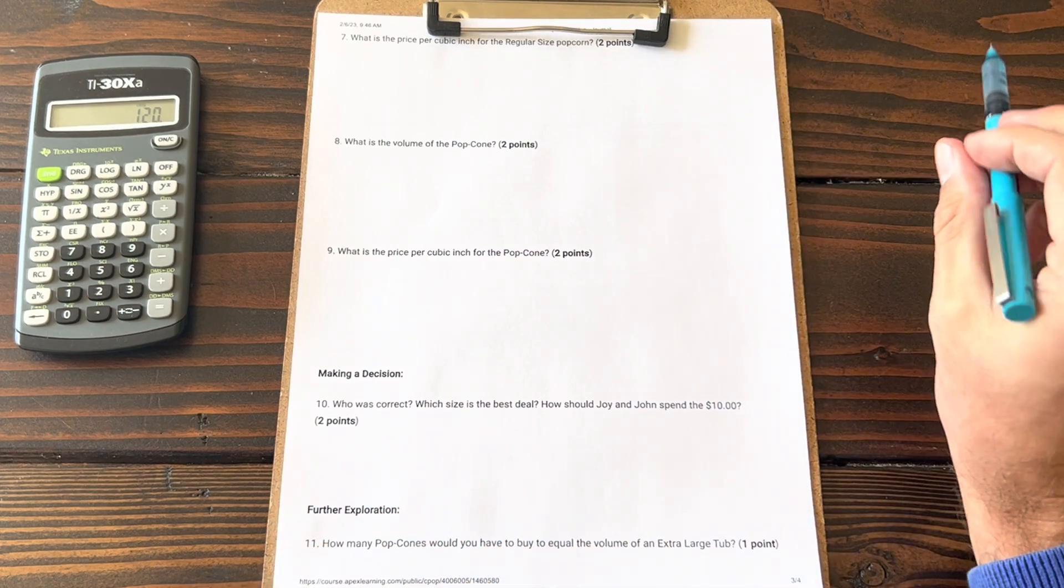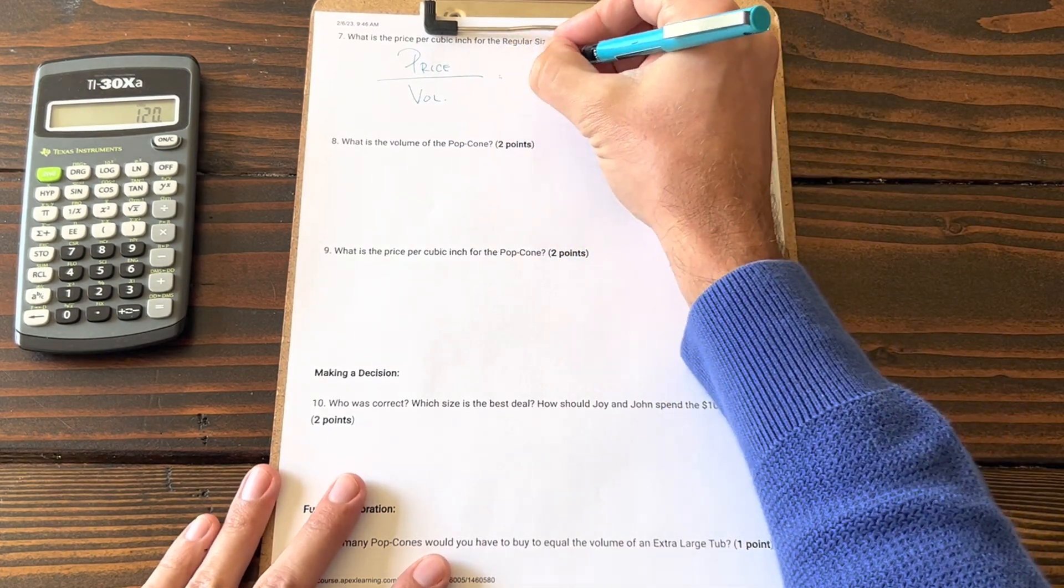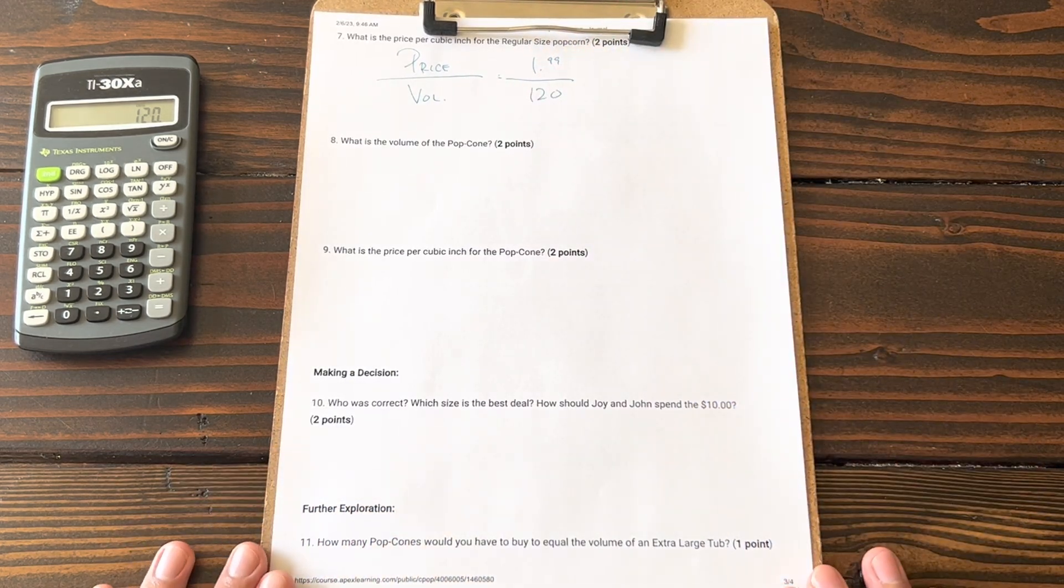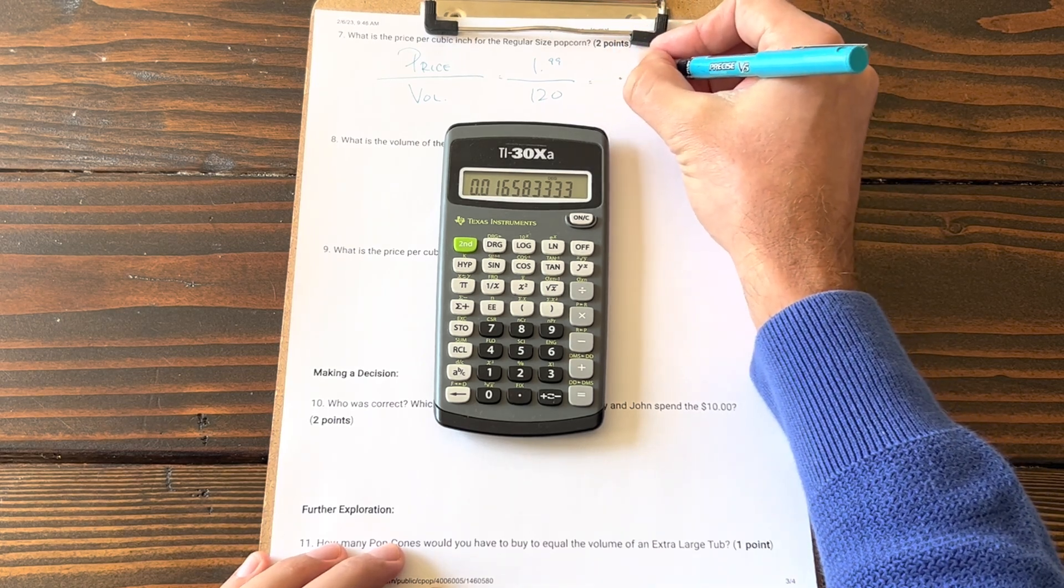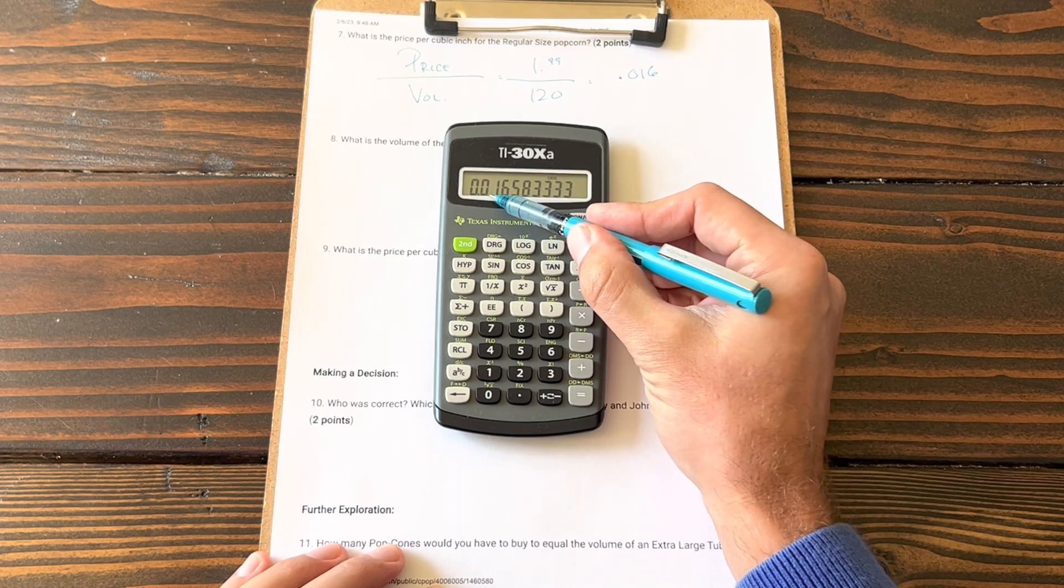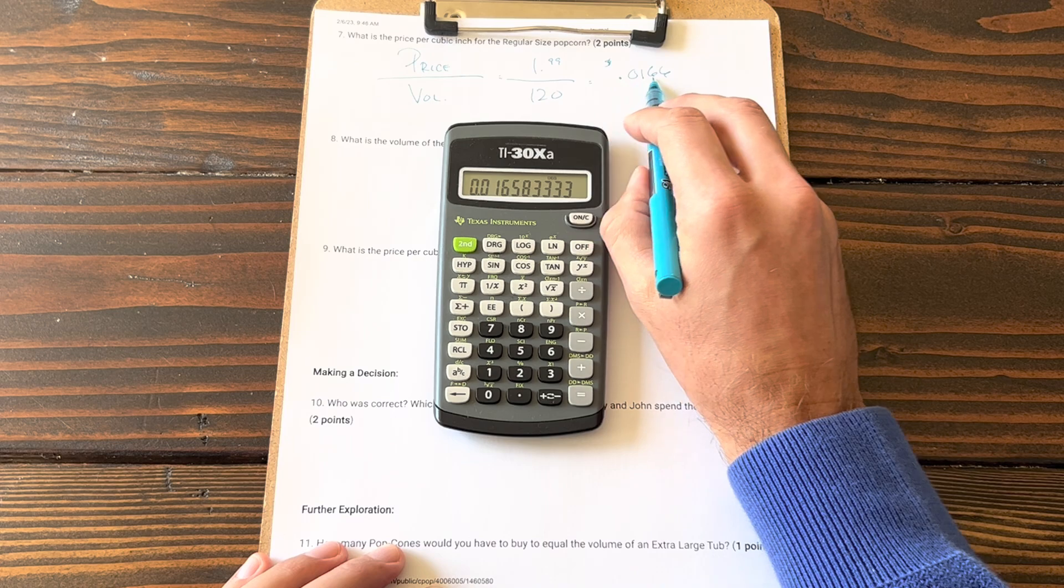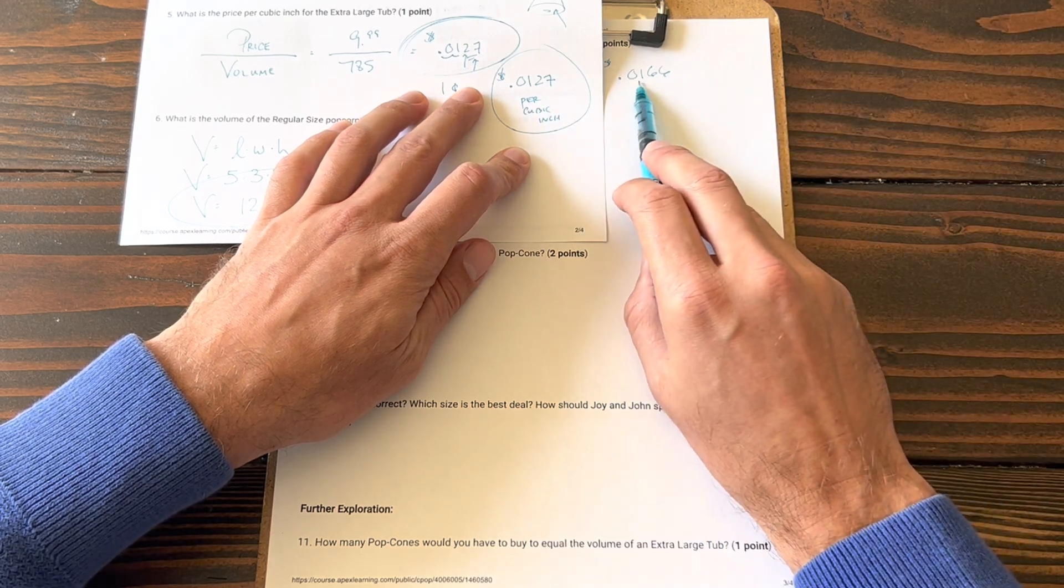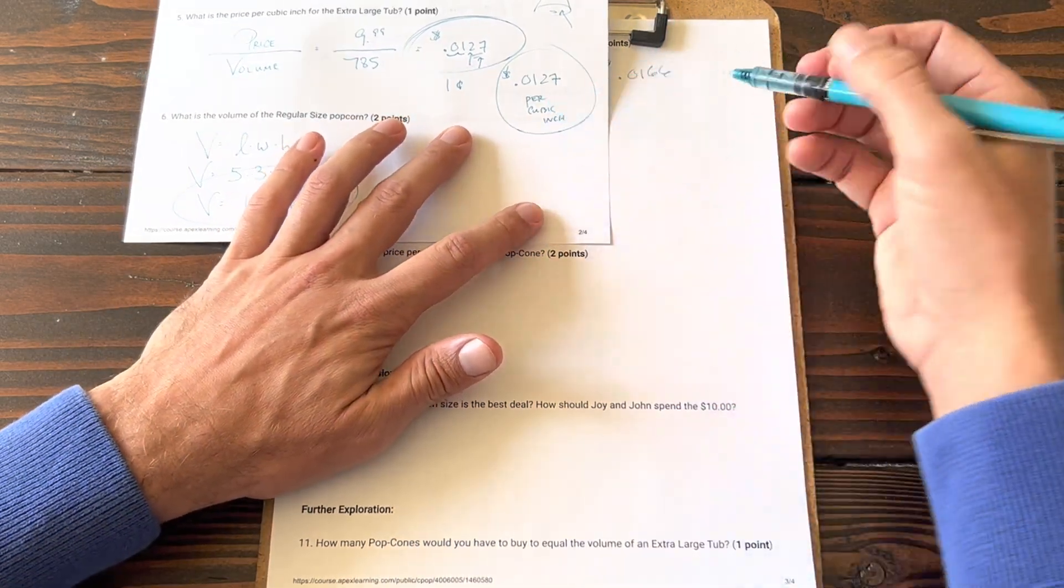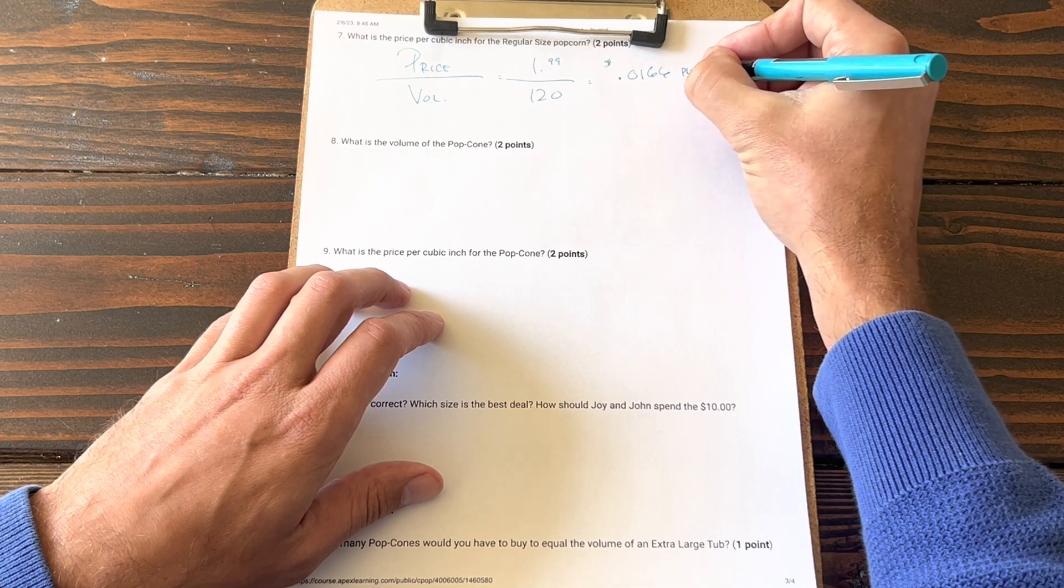Price per cubic inch of the regular size. Again, we're going to do price divided by volume. The price of course was $1.99, volume was 120 inches cubed. Price per cubic inch is 0.016. I'm going to round this up: 0.0166, I'm going to round this to a 6 because the next digit is an 8. So again, that's just over one cent, but it's slightly more than the extra large tub. If you recall, the extra large tub was cheaper. It was one cent and 27 ten-thousandths we can say. And this is one cent and 66 ten-thousandths. So although it's very minor, if we're still comparing greater or less than, the XL tub was cheaper.